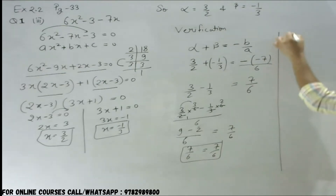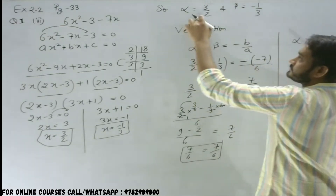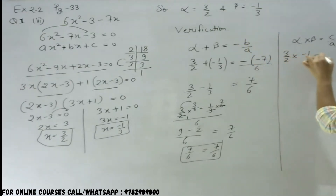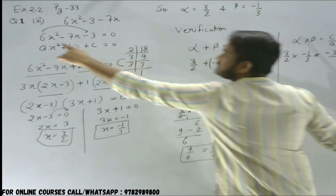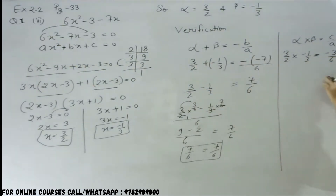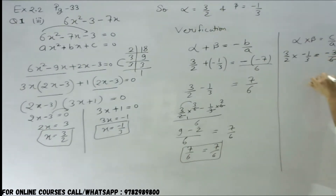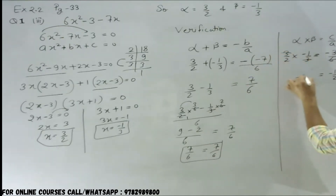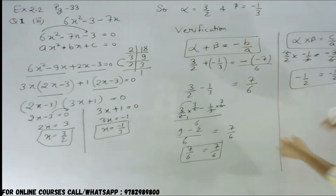Second verification: alpha into beta equals c over a. Alpha is 3 over 2, beta is minus 1 over 3, so 3 over 2 into minus 1 over 3 equals minus 1 over 2. The constant term c is minus 3 and a is 6, so c over a equals minus 3 over 6 equals minus 1 over 2. Hence minus 1 over 2 equals minus 1 over 2. Both verifications are proved, along with the values of alpha and beta.